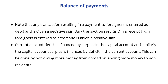A current account deficit is financed by a surplus in the capital account, and similarly, a capital account surplus is financed by a deficit in the current account. This balancing can be done by borrowing more money from abroad or lending more money to non-residents.